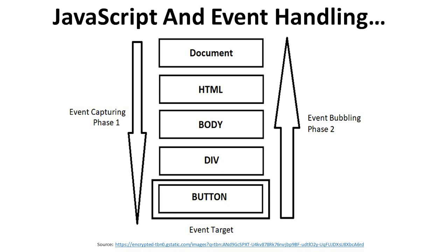Whenever we have a button, it provides input to div, then body, then HTML, and then document. The document is in phase 1: event capturing. The arrow downward represents event capturing at phase 1. From the event target back to document, it is event bubbling in phase 2. So in phase 1 we have event capturing, and in phase 2 we have event bubbling.